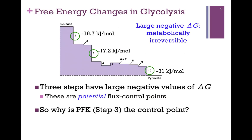These are the possible flux control points, but as mentioned in an earlier video, the actual control point is Step 3, catalyzed by phosphofructokinase. So the question is, why that particular step and not the other two?